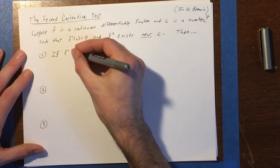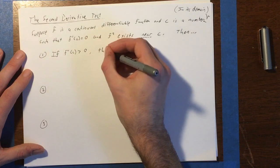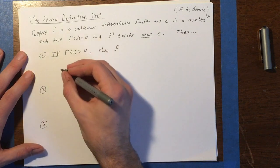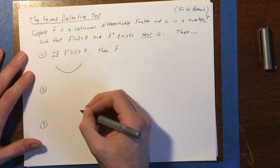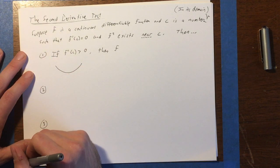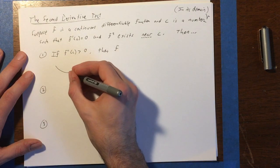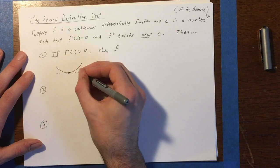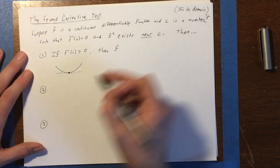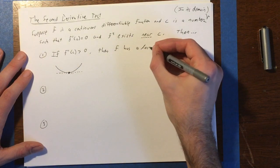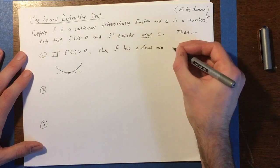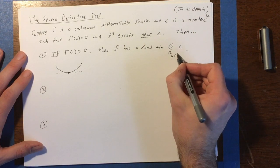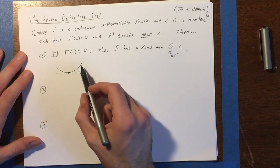First, if f double prime of c is positive, then we know, well, it would look like this. Positive means concave up, right? So we're talking now about a section of the curve which is concave up, and there's a point with a horizontal tangent line, f prime equals zero, so we're talking about a situation like this. Then f has a local minimum, and you can see it right in the picture at c.